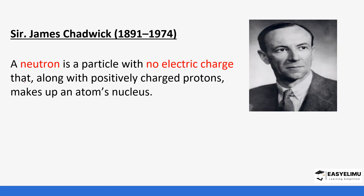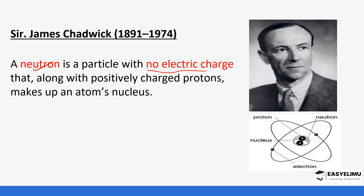Finally came James Chadwick, who was the first person to discover the neutron in the nucleus. Previous scientists had talked about a positive charge in the nucleus but were unable to discover the neutron. Chadwick did experiments and discovered the neutron, finding that it did not have any charge although it contributed to the total mass of the atom. So the nucleus now contained positively charged protons and the neutral neutrons discovered by Chadwick.